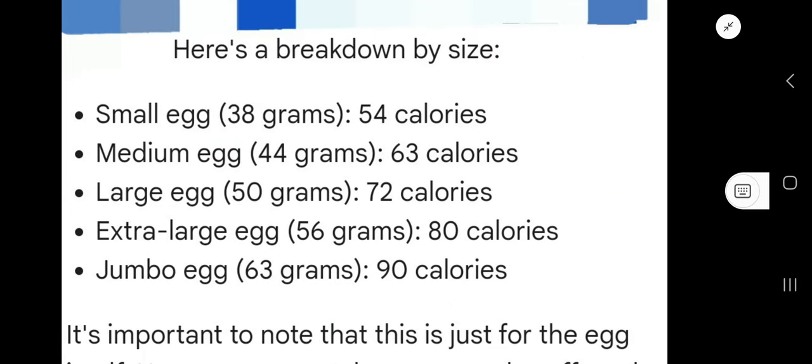Here's a breakdown by size: a small egg at 38 grams has 54 calories, a medium egg at 44 grams has 63 calories, a large egg at 50 grams has 72 calories, an extra-large egg at 56 grams has 80 calories, and jumbo eggs at 63 grams can have 90 calories.